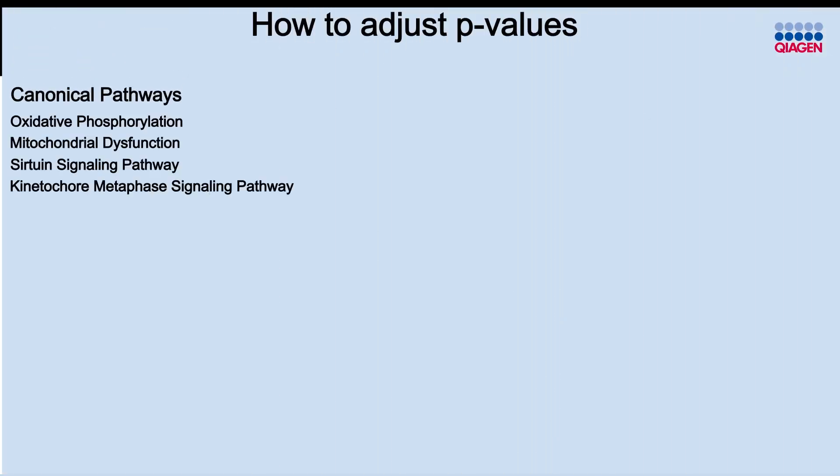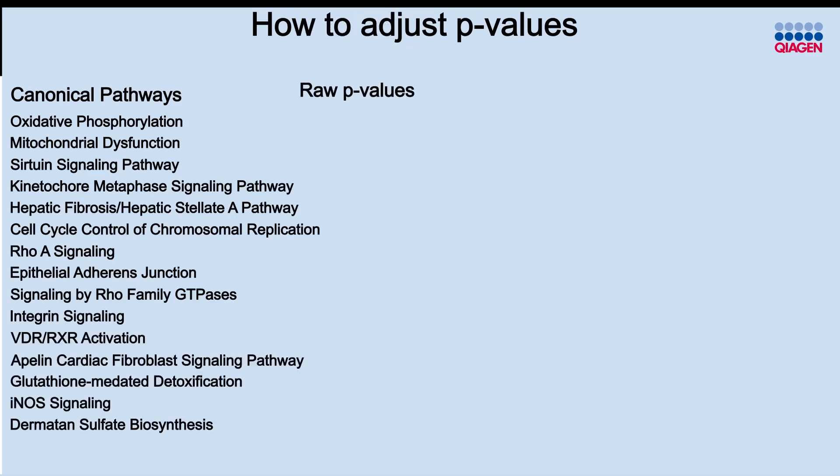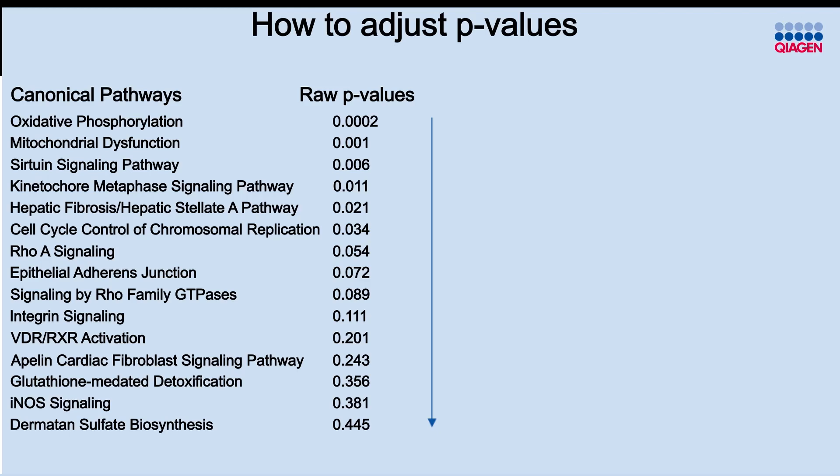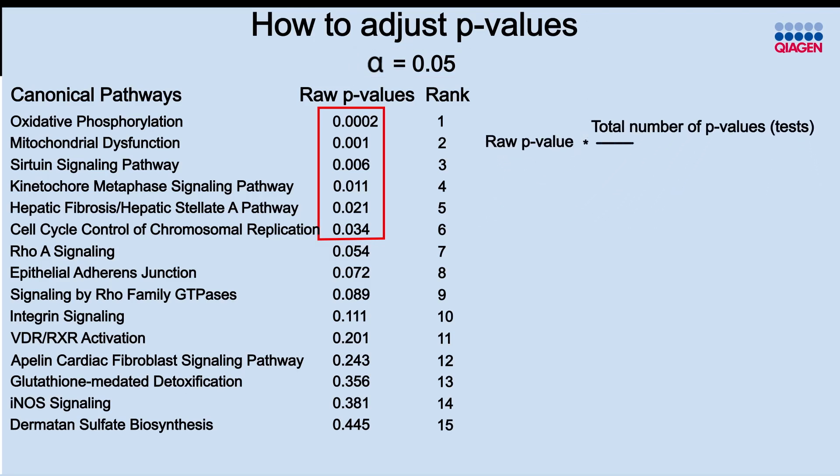Here's how adjusting the p-values works. Here's an example of 15 pathways from an IPA core analysis and their associated p-values that were calculated using the right-tailed Fisher's exact test. You start by arranging the p-values from smallest to largest. Each p-value is given a rank. Because we have 15 p-values, the largest p-value gets a rank of 15, while the smallest gets a rank of 1. Here, we're going to use the usual alpha of 0.05, so that less than 5% of our significant results will be considered false positives. The formula for adjusting each p-value is the raw p-value times the total number of p-values divided by the rank of the current p-value. We perform this calculation starting with the last p-value in the list.